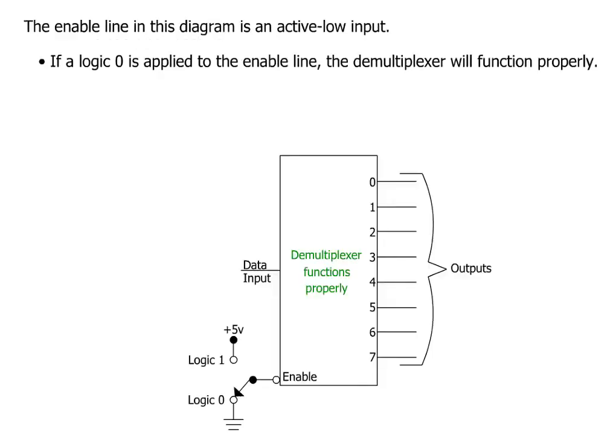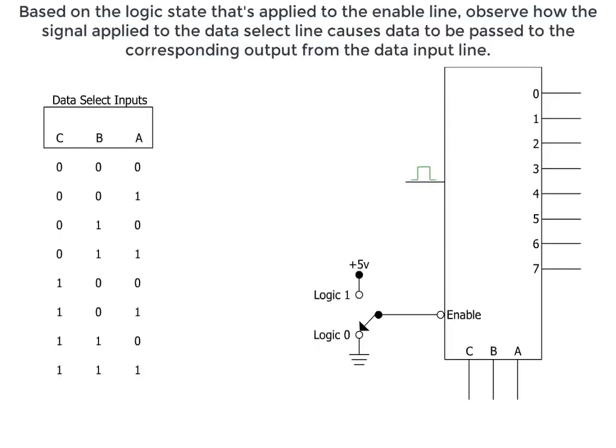The enable line in this diagram is an active low input. If a logic 0 is applied to the enable line, the demultiplexer will function properly. Based on the logic state applied to the enable line, observe how the signal applied to the data select line causes data to be passed to the corresponding output from the data input line. Notice when the enable input receives a low logic signal, the demultiplexer operates normally.